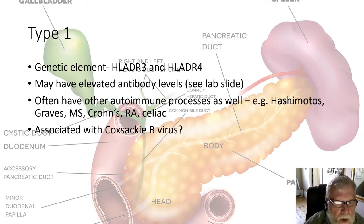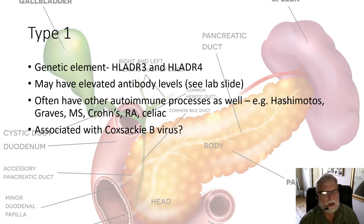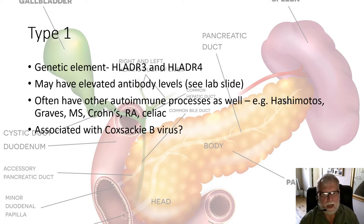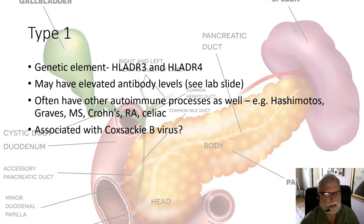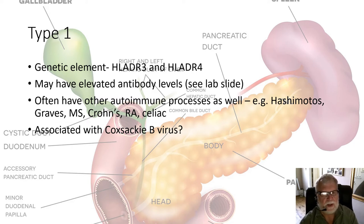Going back to type 1 — it probably has a genetic element. Some people will get a virus, maybe a Coxsackie virus, which seems to trigger some of these hormonal processes. Certain HLA markers — human leukocyte antigens — are relevant: B27 is associated with ankylosing spondylitis, while DR3 and DR4 seem to be associated with type 1 diabetes. People with type 1 diabetes often have certain antibody levels, usually the GAD and other autoimmune antibodies. They are also at greater risk for other type 1 autoimmune processes: Hashimoto's, Graves, multiple sclerosis, Crohn's, rheumatoid arthritis, and celiac.